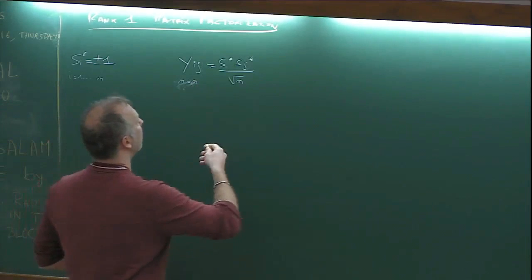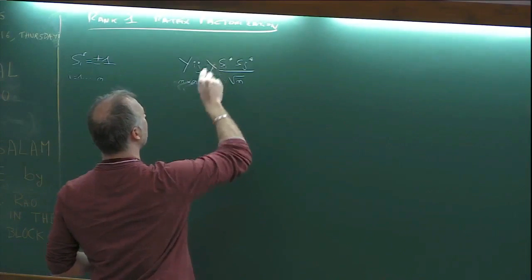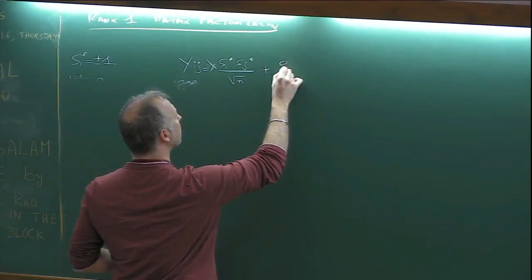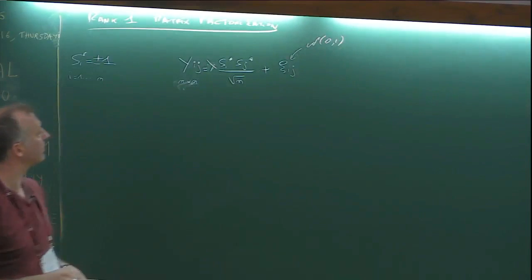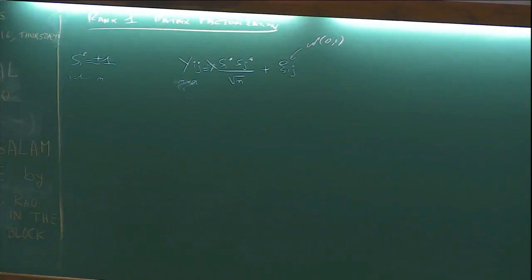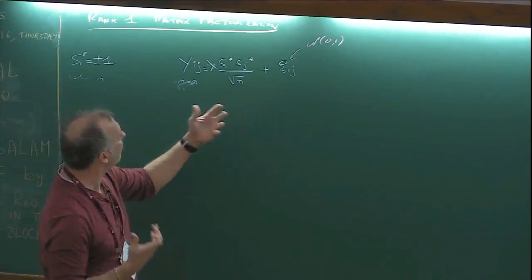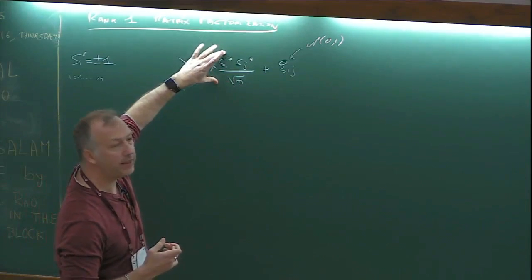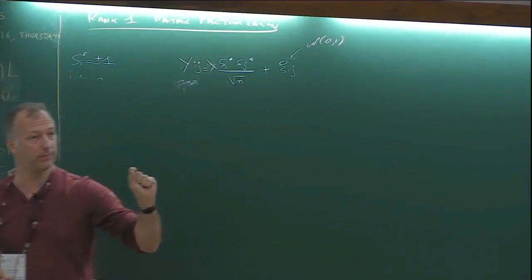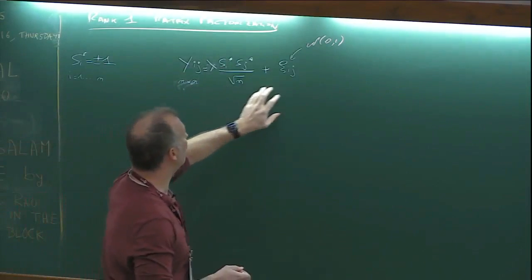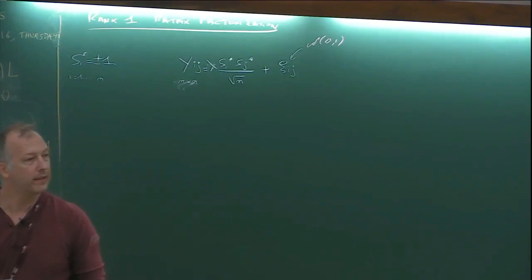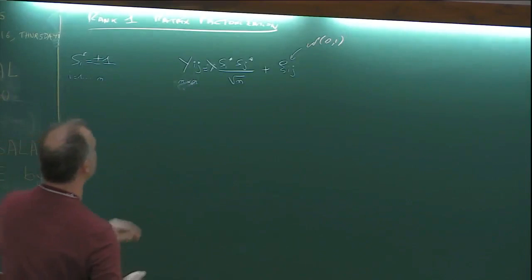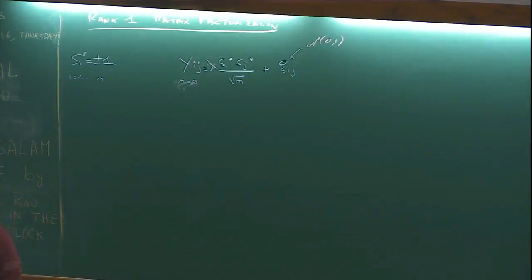So let's make it harder. I'm adding a Gaussian noise term, and I'm making it really hard because I'm dividing the signal — the rank-one element — by square root of n, so it's really small. And I'm adding noise which is order one. So this is what you observe: a matrix which is rank-one plus noise, and you try to find back that vector.